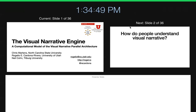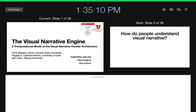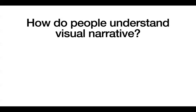I'm presenting on behalf of my colleagues and co-conspirators Chris Martins and Neil Cohn. The title of the talk is 'Visual Narrative Engine: A Model of the Visual Narrative Parallel Architecture.' This talk is intentionally designed to be at a very high level because if you want the details I'm happy to direct you to the paper or talk to you offline. I really want everyone to just walk away with the concept of what's going on here. This is really motivated by the question: how is it that people understand visual narrative?